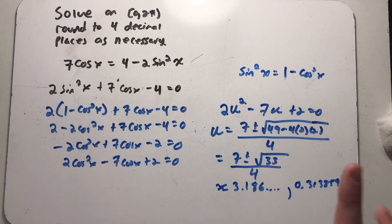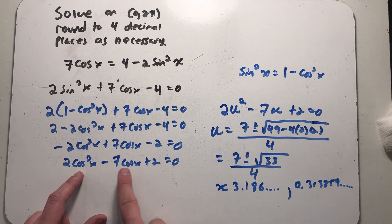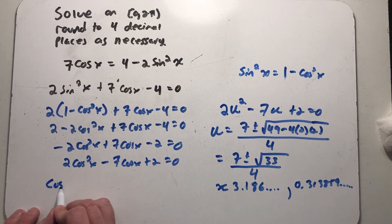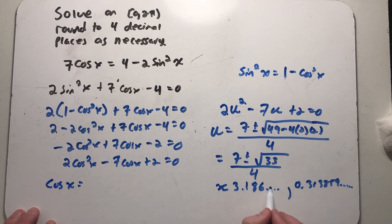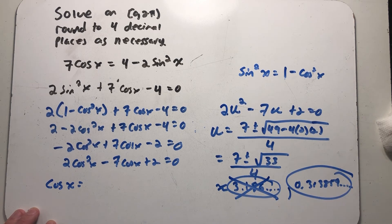Alright thinking about what u is. u is cosine, right? u squared minus 7u plus 2. So these are possible answers for what cosine of x could be. And it can't be this one, right? The largest value cosine can ever be is 1. So that's not going to work. So this is the only thing I have to play with.